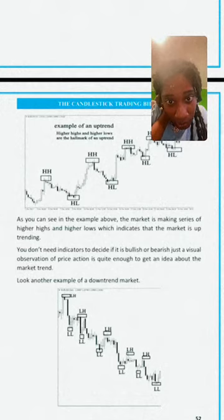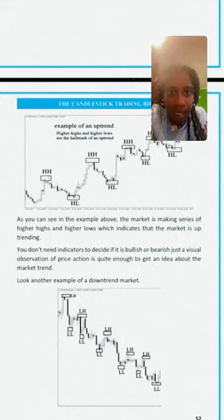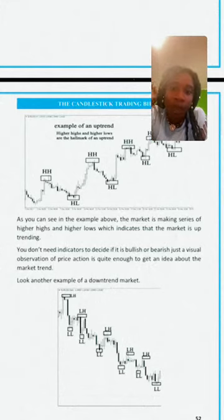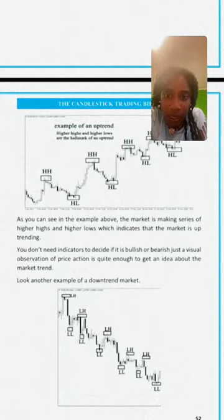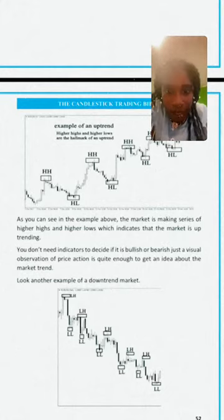You can look at a chart on a one-minute timeframe and it looks like a downtrend, but if you pull back out to an hour or a day, you can see it's actually going in another direction — like gold, for example.